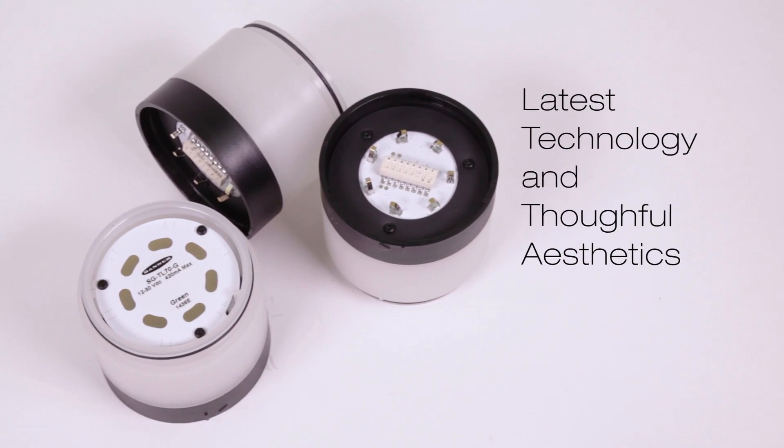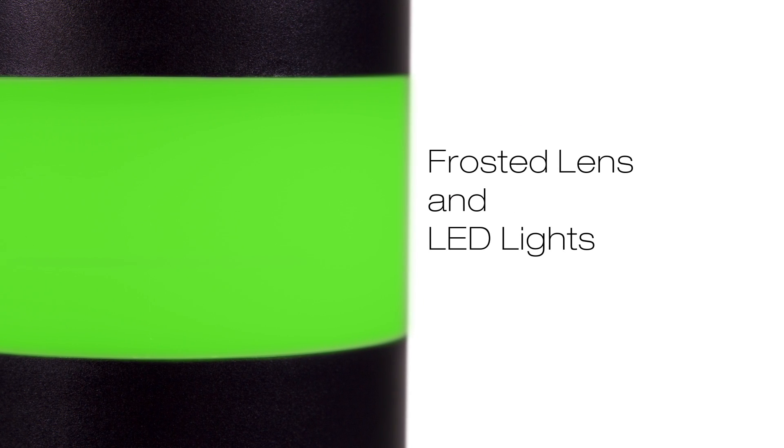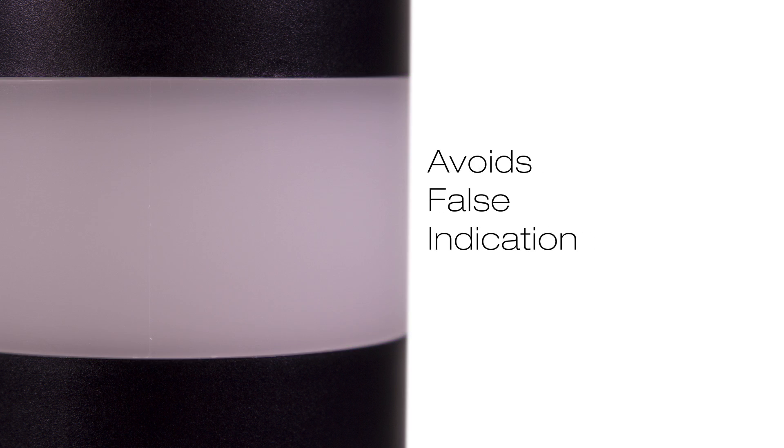Banner engineered a better design using the latest technology and thoughtful aesthetics. Unlike other indicators that use clear or colored lenses and dim bulbs, the TL70 uses a frosted lens and LED lights to deliver better, brighter status indication and a pure gray when off to avoid false indication from ambient light.